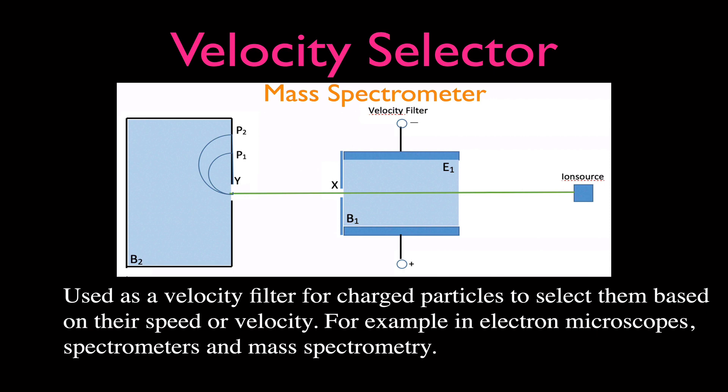What is a velocity selector, sometimes called a velocity filter, and sometimes called a beans filter? A velocity selector is used as a velocity filter for charged particles to select them based on their speed or velocity. They're used in electron microscopes, spectrometers, and also in mass spectrometry. We have here a diagram — a schematic of a mass spectrometer — and it consists of an ion source, the velocity selector, and then a second magnetic field.